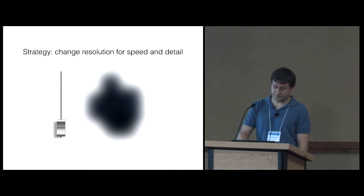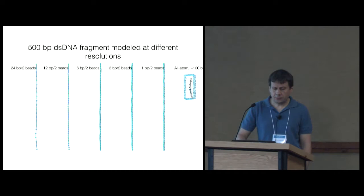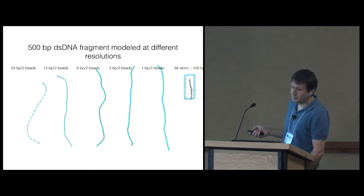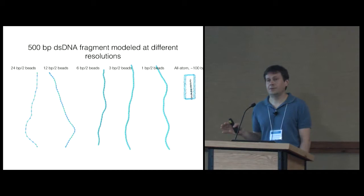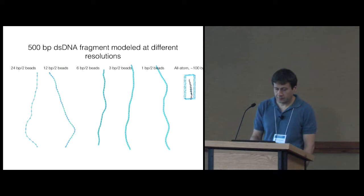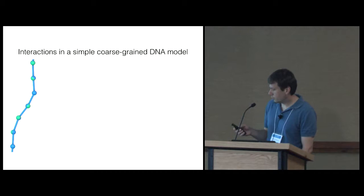So we had to rethink our strategy, and this is how we arrived with the following. We said, well, why don't we just then trade speed for precision and basically develop a multi-resolution way of modeling DNA systems just like that. So here's how it's done. You're looking at the same piece of DNA, similar piece of DNA modeled at different resolutions starting from 24 base pairs per two beads going all the way to the all-atom. All of that has the same physical properties. It has the same persistence length and everything else.